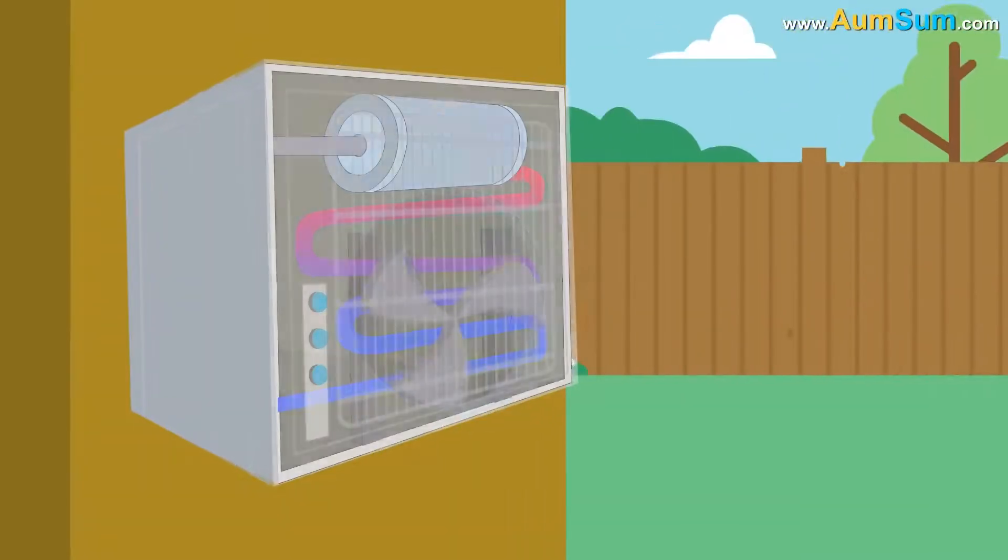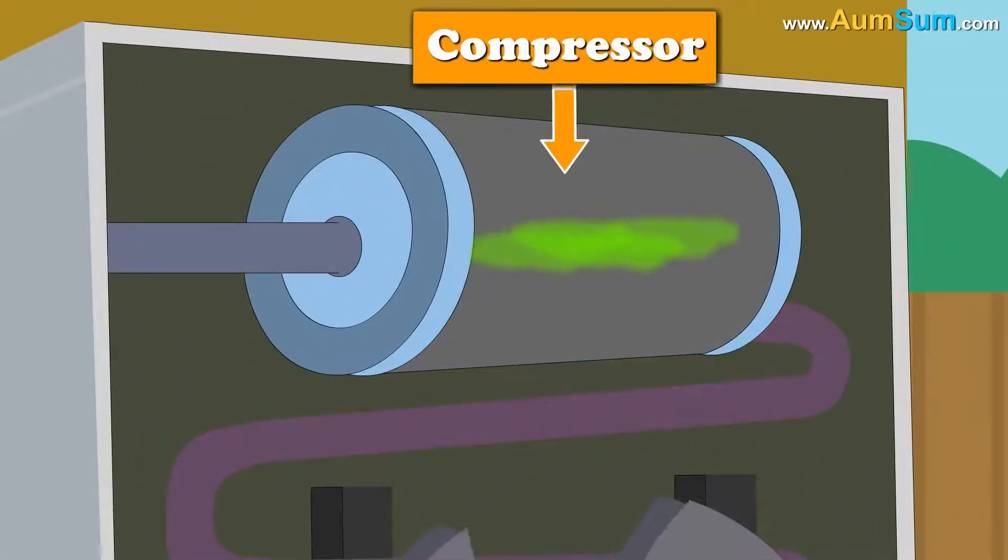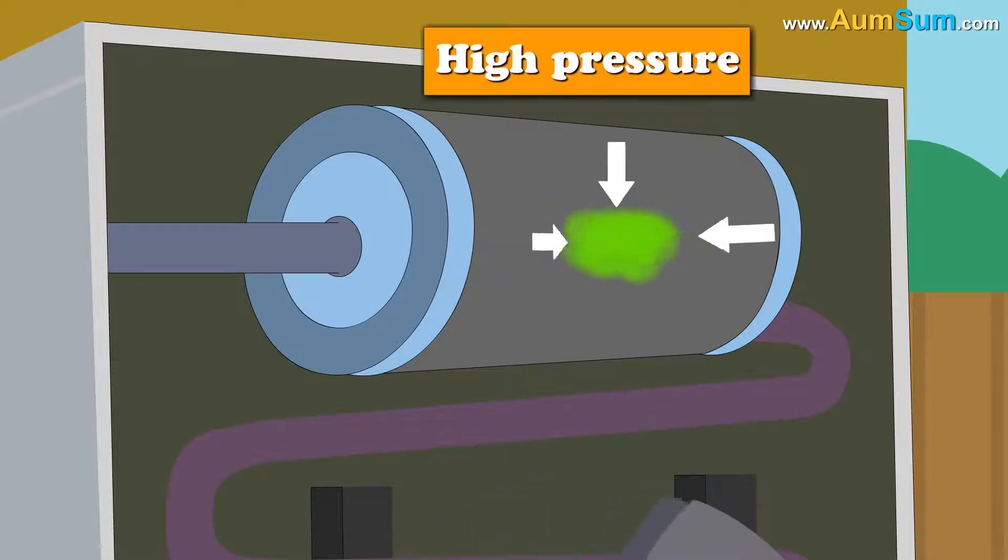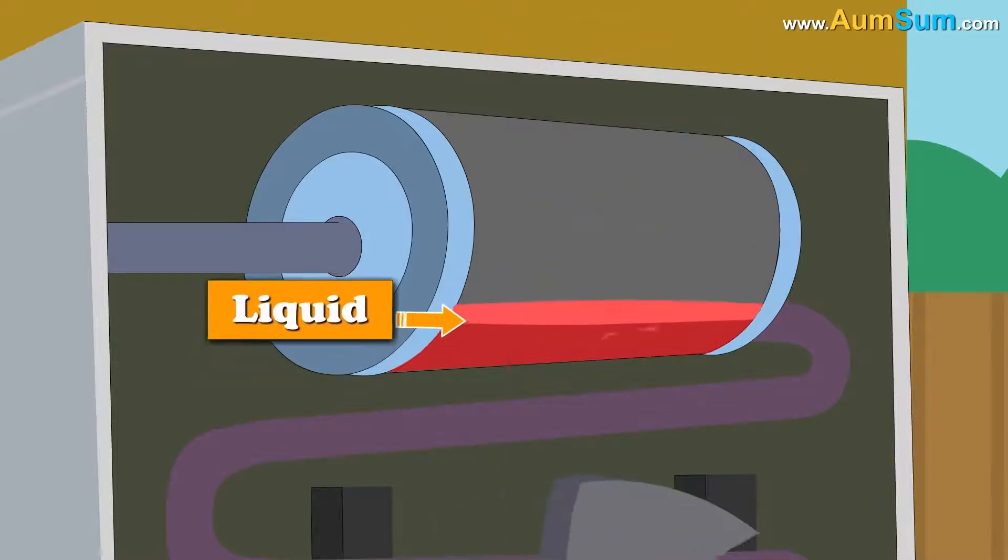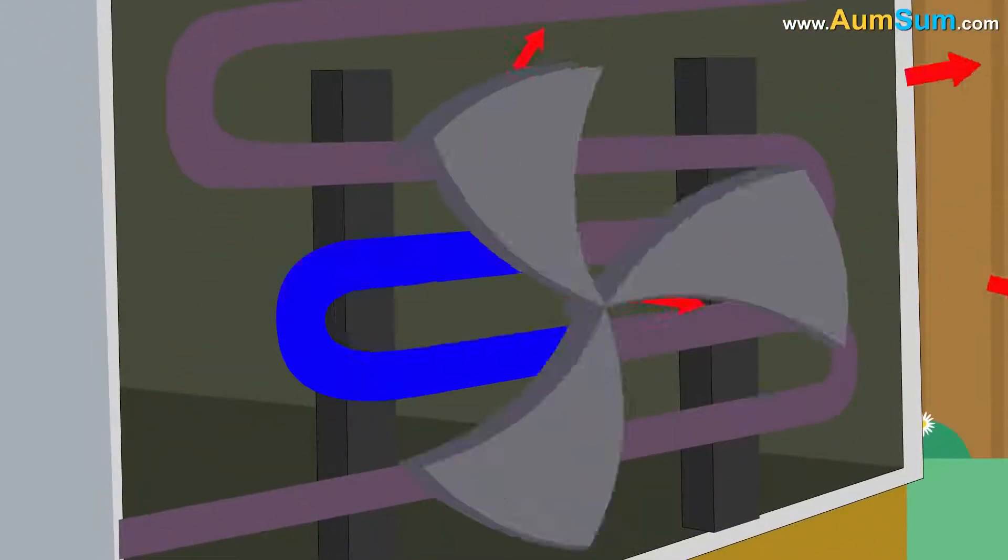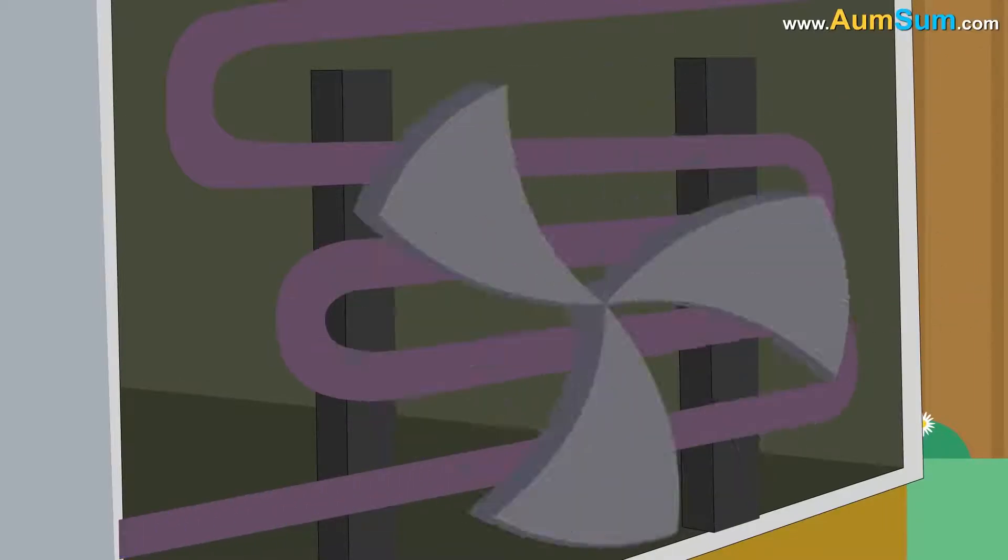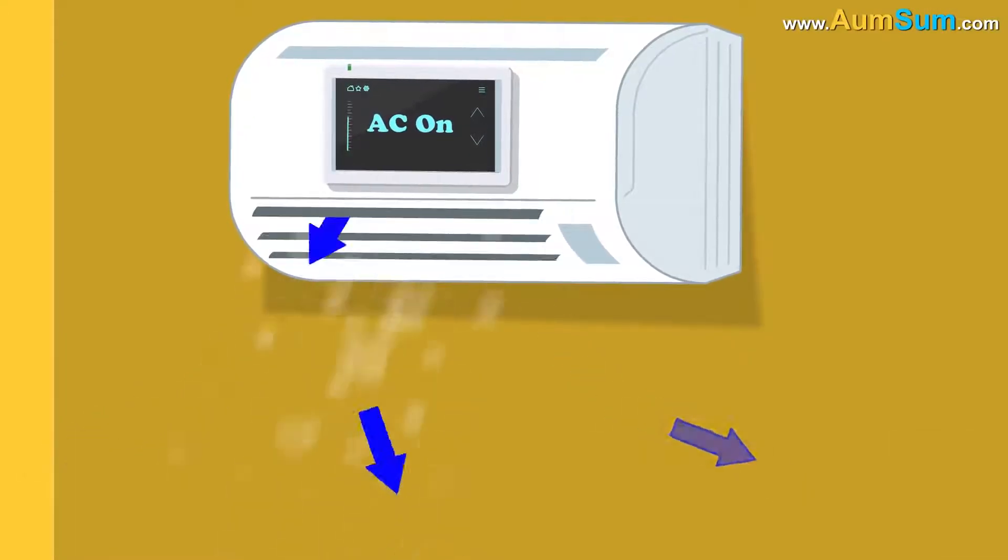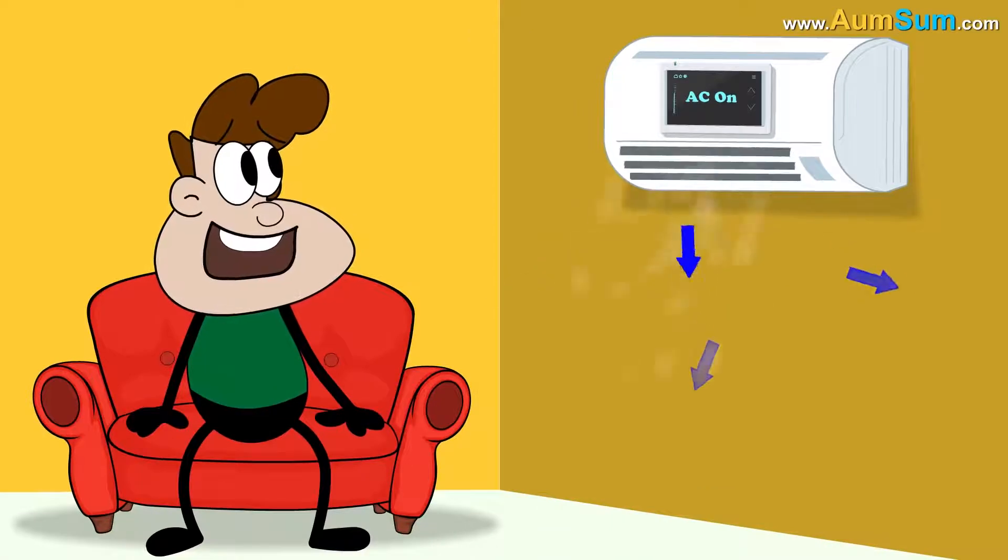Now, this gaseous refrigerant passes through the compressor which puts it under high pressure and converts it back to liquid state. The extra heat which is generated during this process is let out using the condenser coils and an outdoor fan. This cycle keeps on repeating itself. This is how an air conditioner works and our rooms remain cool.